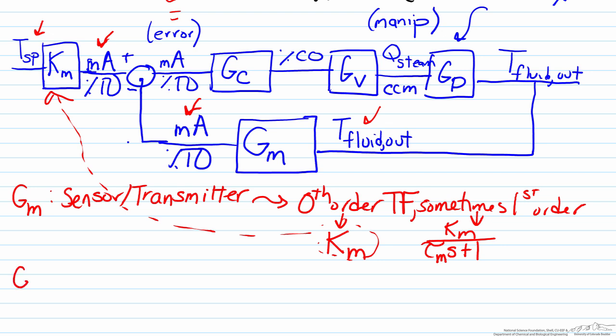The next transfer function here that we see is GC. That is the controller transfer function, and its transfer function is dependent on what type of controller you have, whether it be P, PI, PID, PD, etc.